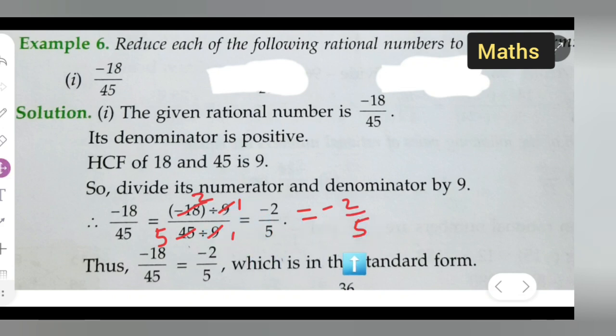You have to cancel this. Next is minus 18 upon 45 is equal to minus 2 upon 5 which is in the standard form.